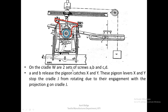Out of these four screws, screws A and B actually release the pigeon catches X and Y. These are the pigeon catches X and Y. These pigeon levers X and Y stop cradle J from rotating due to their engagement with projection G on cradle J. This is cradle J, which these pigeon levers hold and do not allow to oscillate around central boss A.